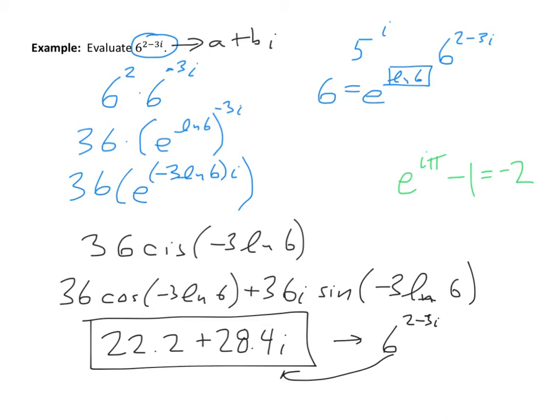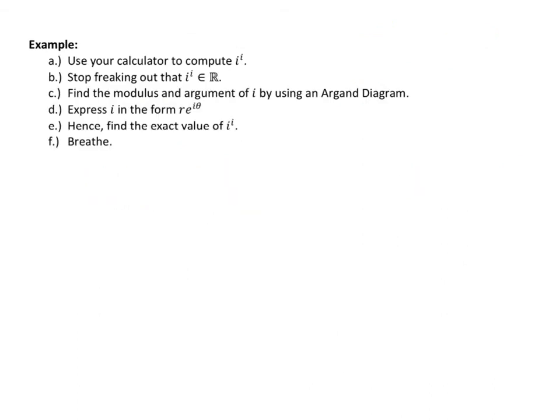Speaking of exciting problems, the next one is amazing. I want you on your calculator to do i to the i power. When you do this, you find that this is 0.208 — and it's real. So step B in this problem is: stop freaking out that i to the i is a real number. My wife actually walked in before I started this section, and she had some very choice words for the fact that i to the i power is real. But let's try and make sense of this.